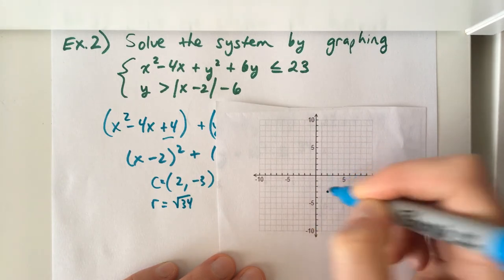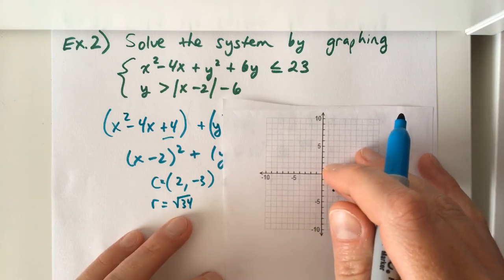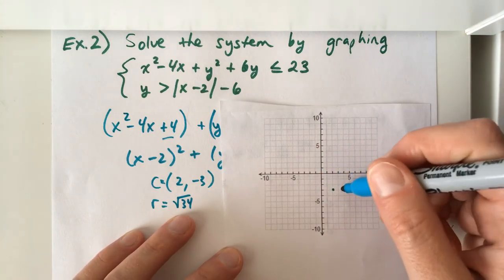2, negative 3. There's our center. And from the center, our radius is the square root of 34. Well, that's just slightly less than the square root of 36, which is 6. So we're going to go about 6 in either direction.